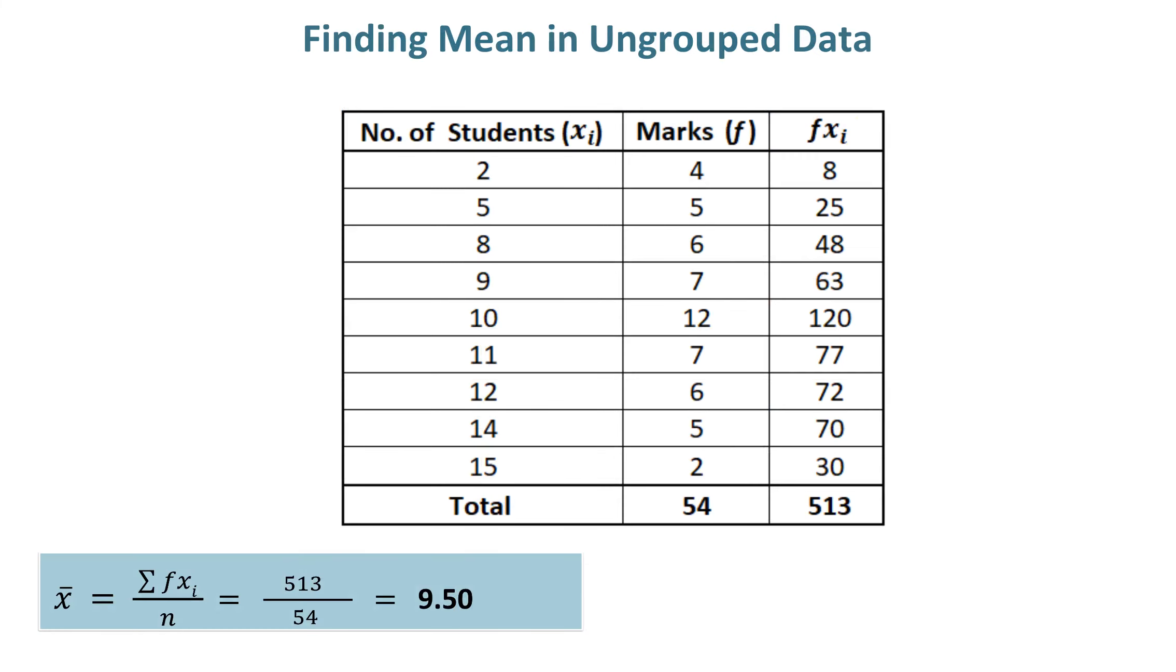Finding mean in ungrouped data. In order to find mean of ungrouped data, there are no class limits, class boundaries, or class marks or class midpoints to find. Thus, number of students becomes class marks or midpoints.